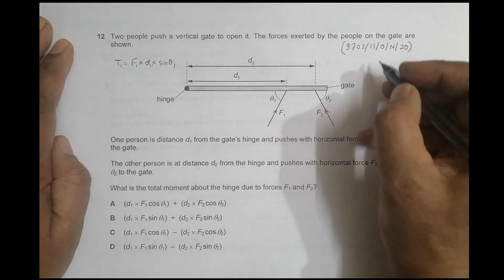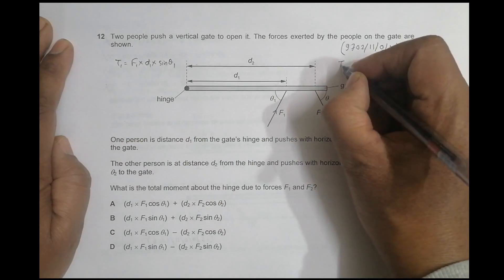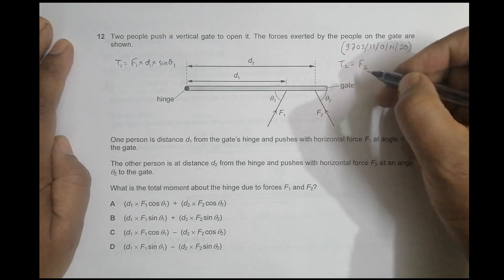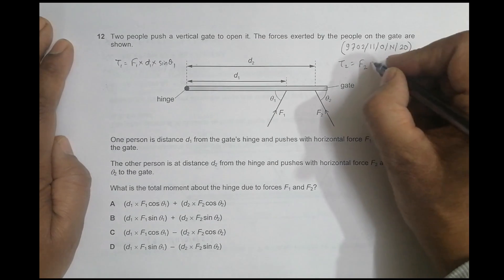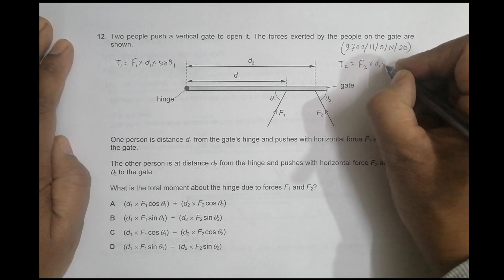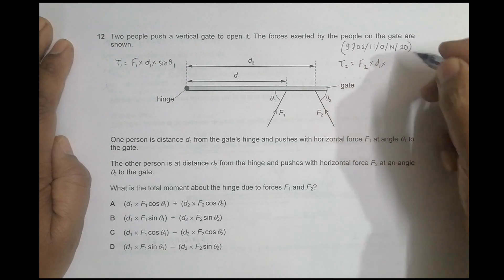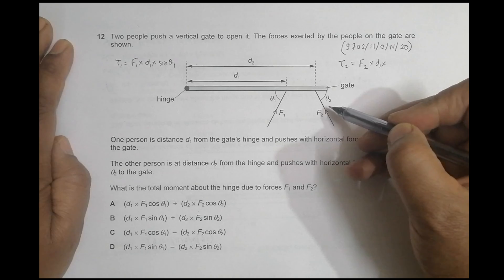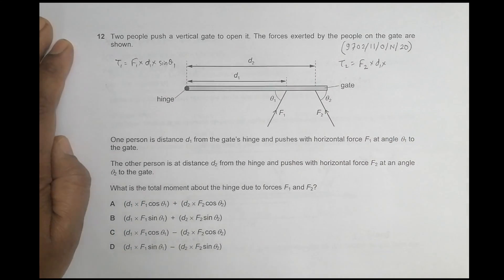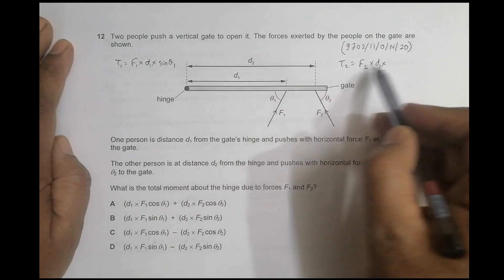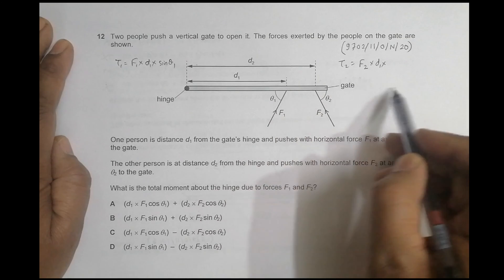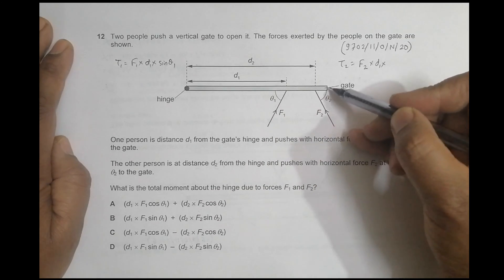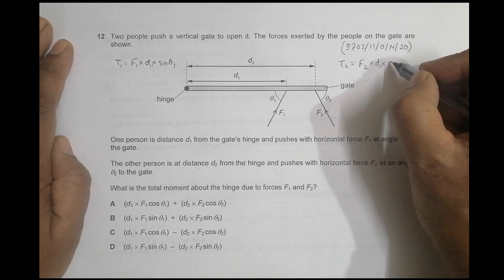Similarly, tau 2 will be equal to f2 × d2 × sin(theta 2), where d2 is the distance from the hinge to the second person's point of application. The direction of d2 and f2 make an angle theta 2 between them.